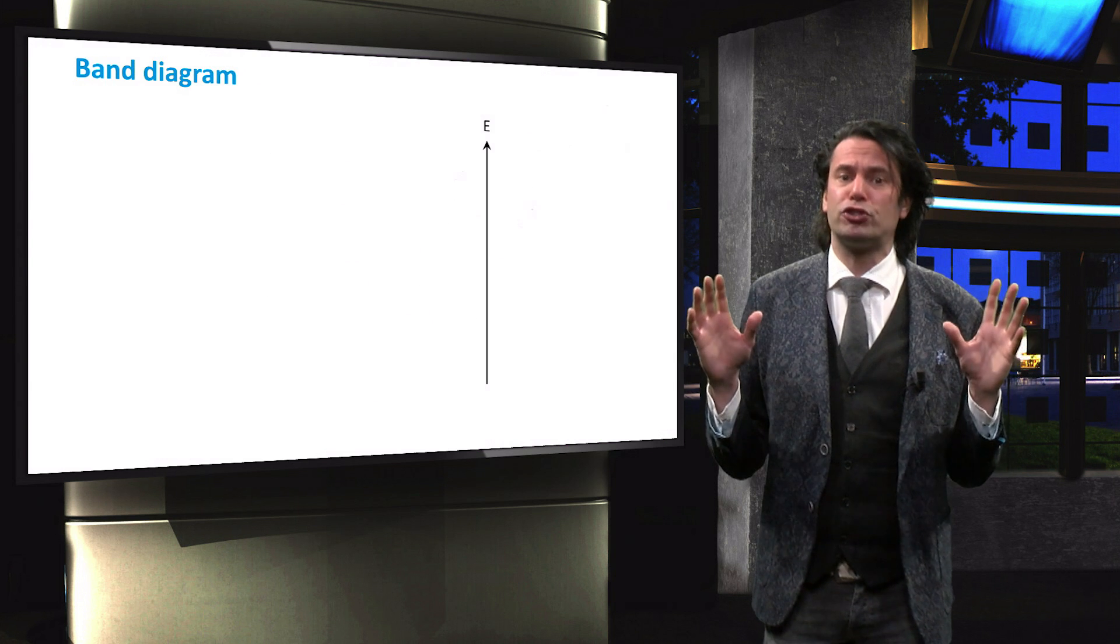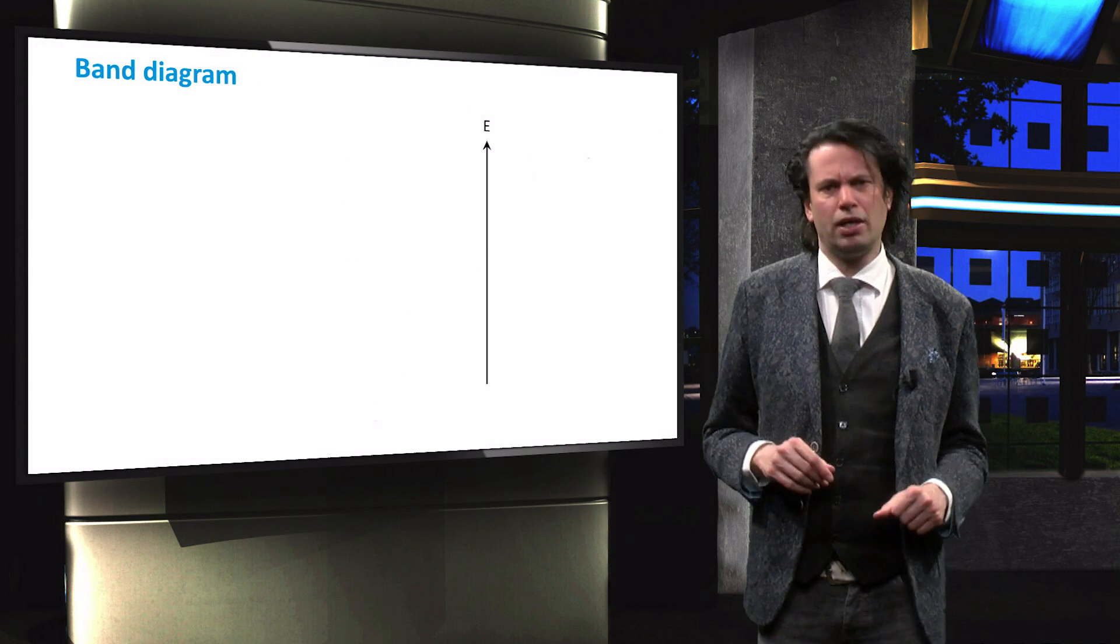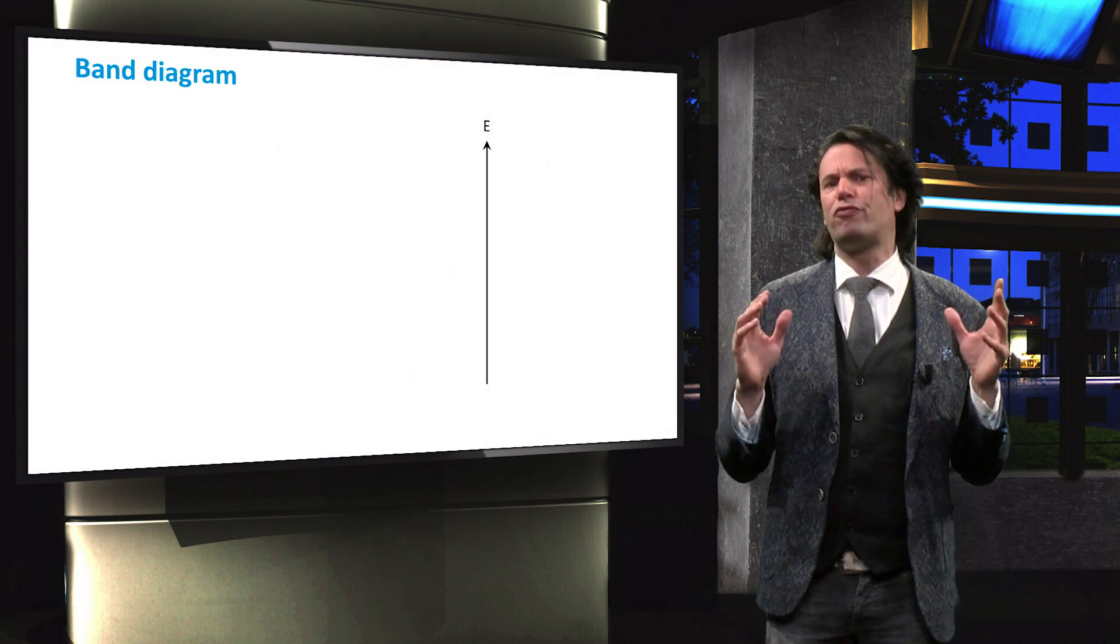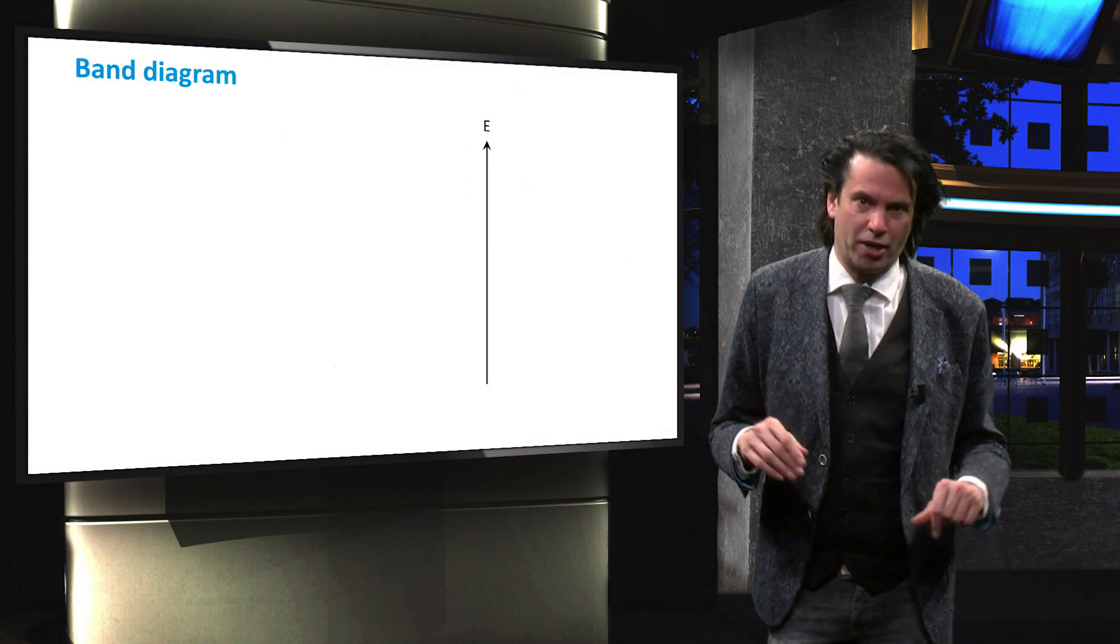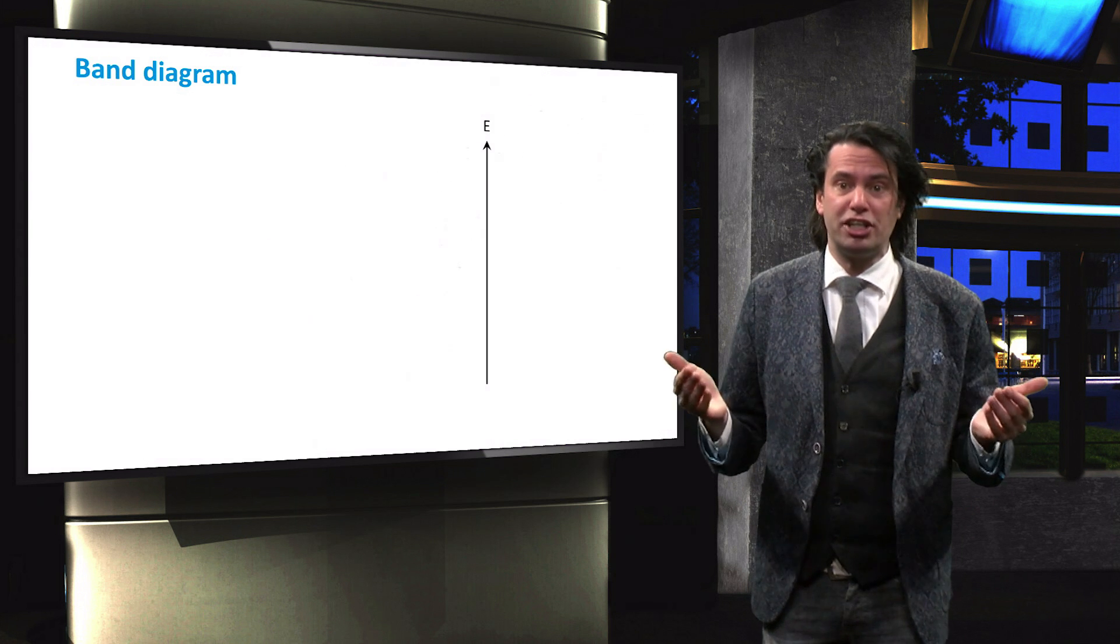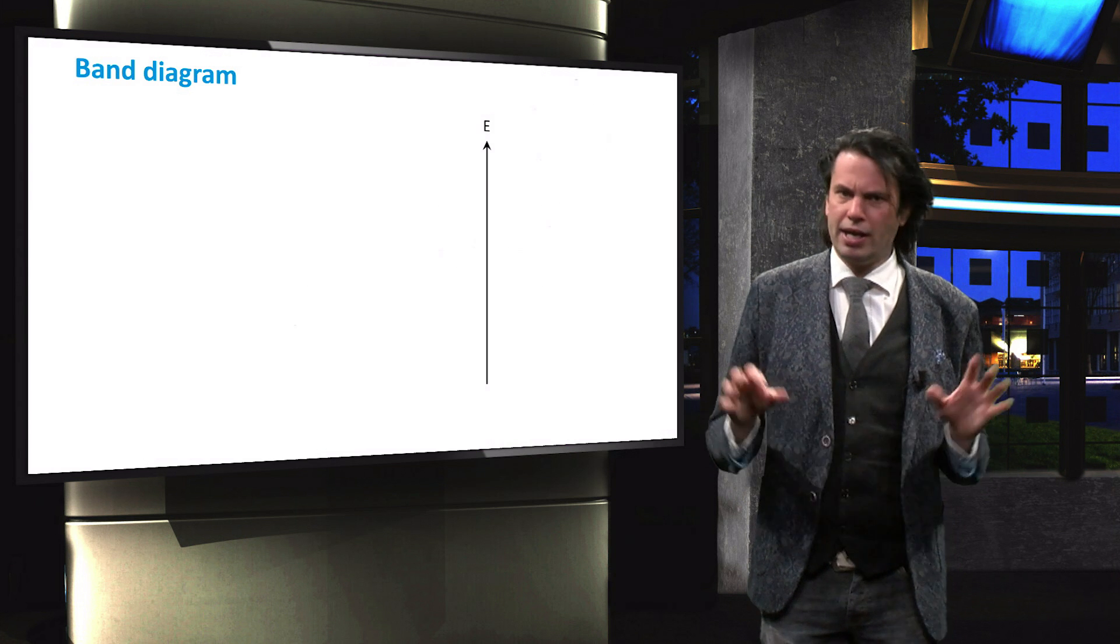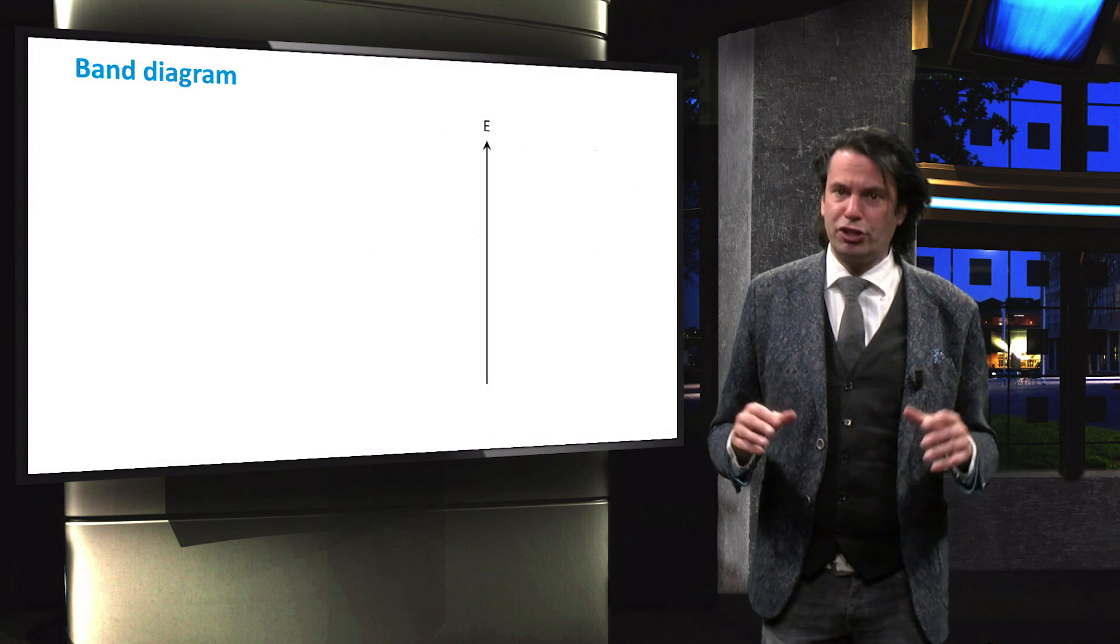But how does the amorphous structure affect the material properties of the silicon lattice? To answer that question, we will first look at the band diagram. As you may recall, the band diagram visualizes the energy levels of electrons in a semiconductor material.